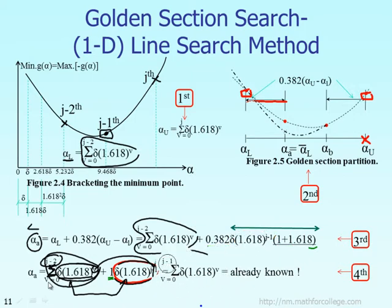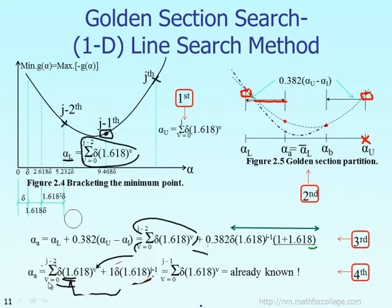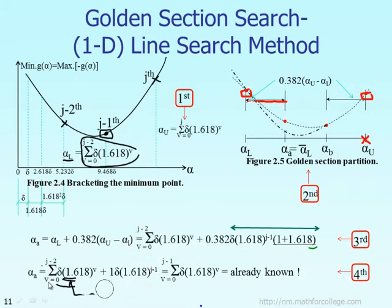This is almost done for this part of the theory of the golden section. We already proved that alpha A is already known based on step number four.